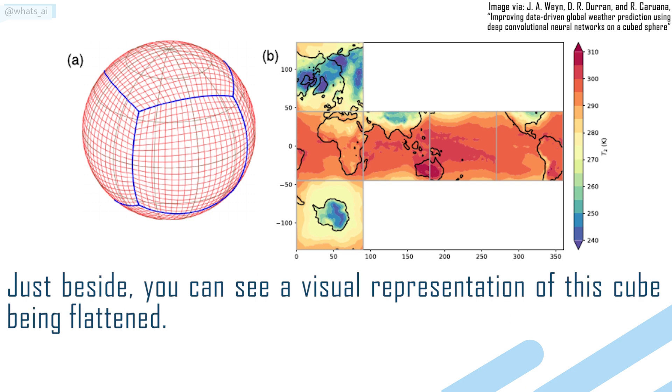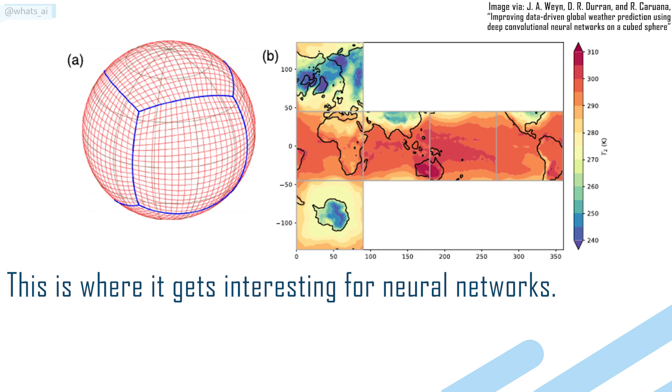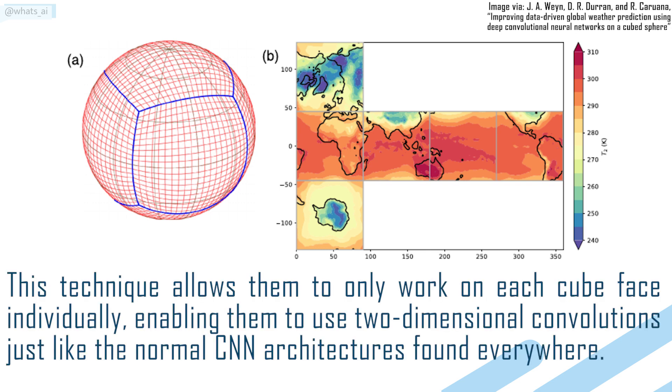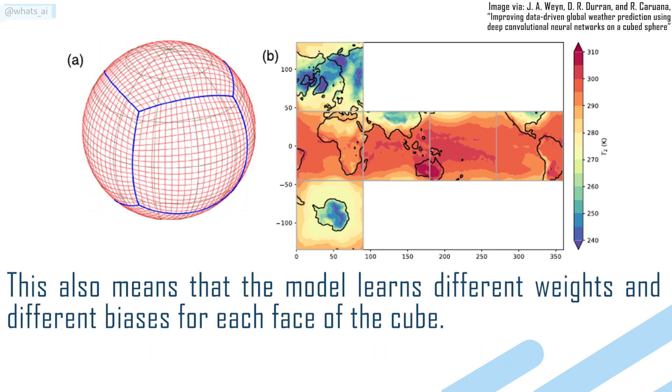Just beside, you can see a visual representation of this cube being flattened. This is where it gets interesting for neural networks. This technique allows them to only work on each cube face individually, enabling them to use two-dimensional convolutions just like the normal CNN architectures found everywhere. This also means that the model learns different weights and different biases for each face of the cube.